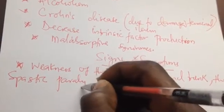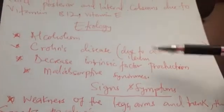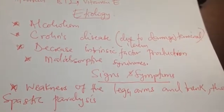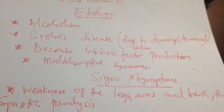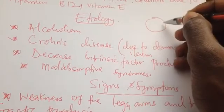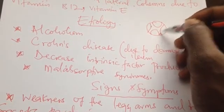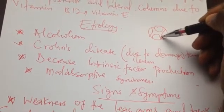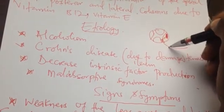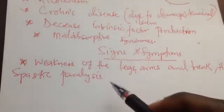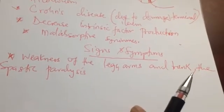Spastic paralysis occurs because the damage involves the upper motor neuron. The fibers descending in the lateral corticospinal tract are upper motor neurons, which meet with the lower motor neuron at the anterior horn. If the damage is here in the descending tract, the lower motor neuron is not directly affected — only the upper motor neuron is — resulting in spastic paralysis.